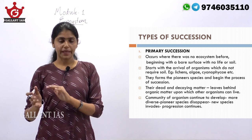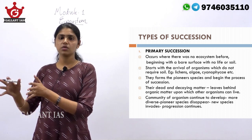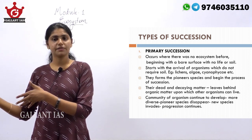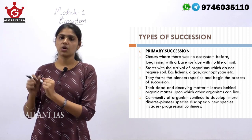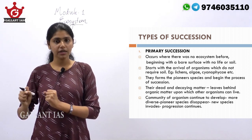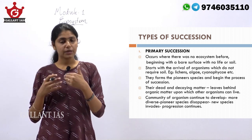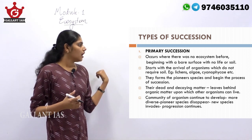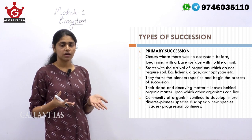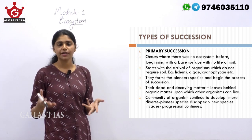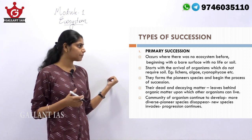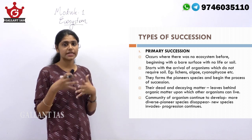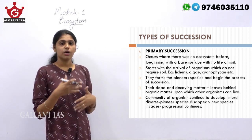In primary succession, there was no ecosystem existing previously in that area, and a fresh ecosystem has been successively developed. This succession occurs on a surface where no previously existing ecosystem was present — for example, a bare rock. Primary succession starts from a bare surface, such as bare rock, where organisms that do not require soil to thrive will inhabit.